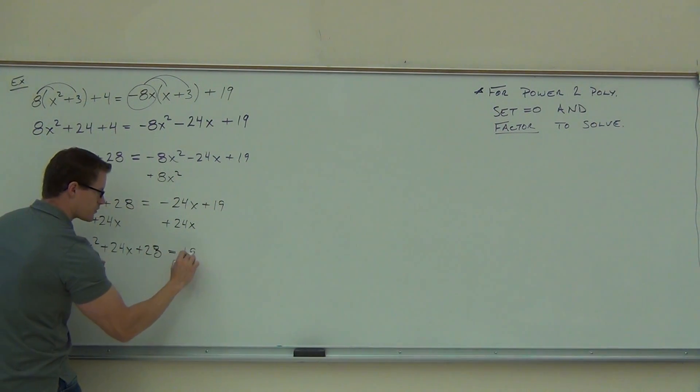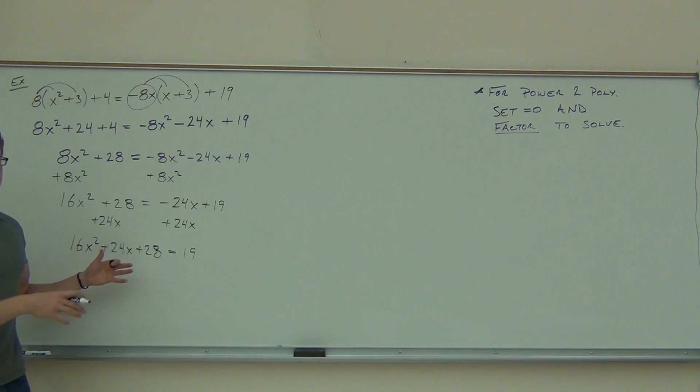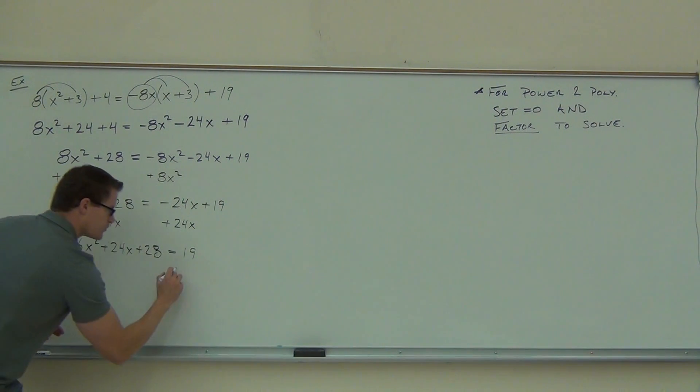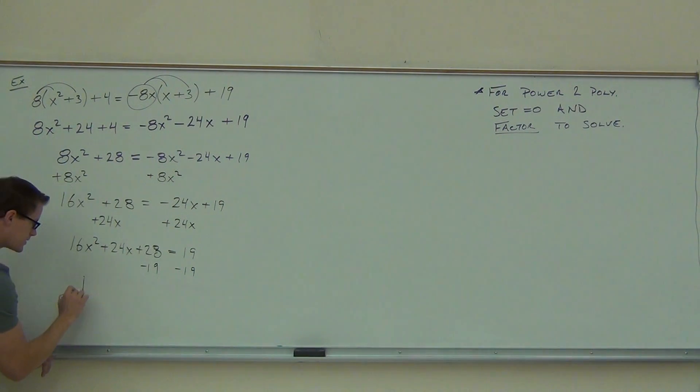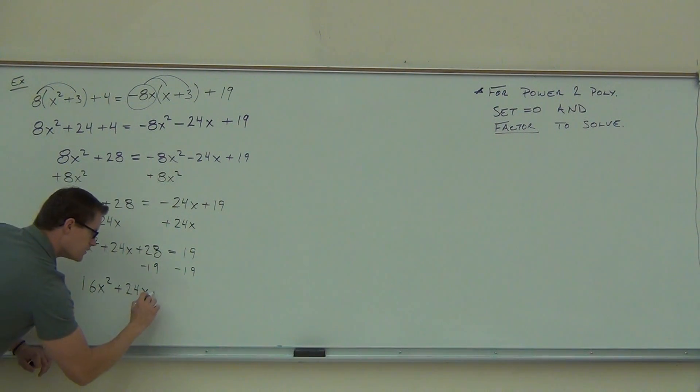And we still have this 19 over the right-hand side. We learned from our last example and from before that it's got to be a zero. So there's one more thing we have to do. We're going to subtract 19 from both sides. And we'll be left with 16x² + 24x. I think that's plus 9, isn't it? Yes.